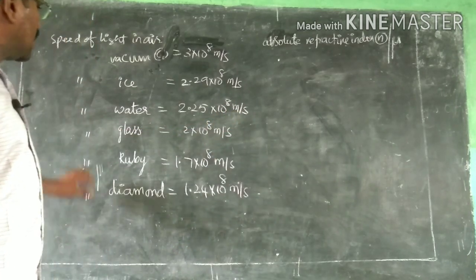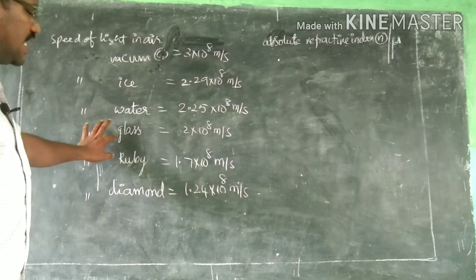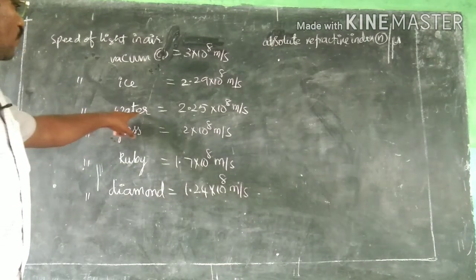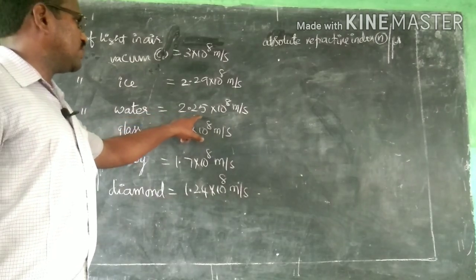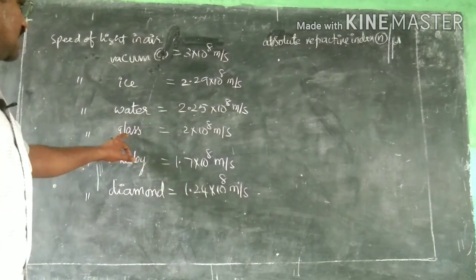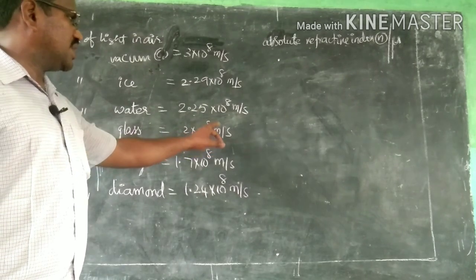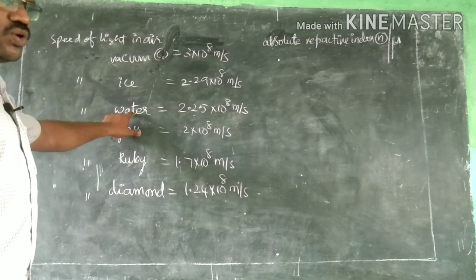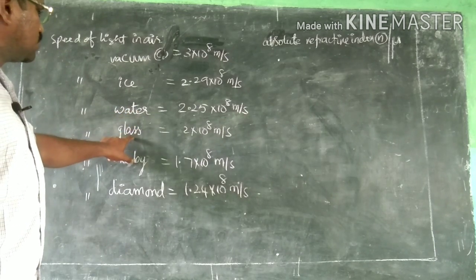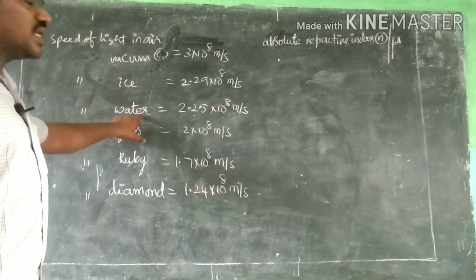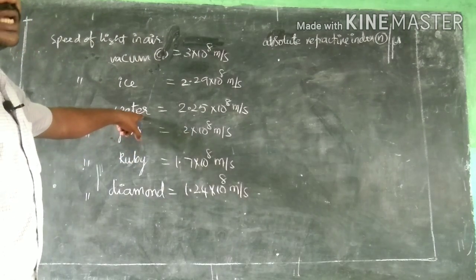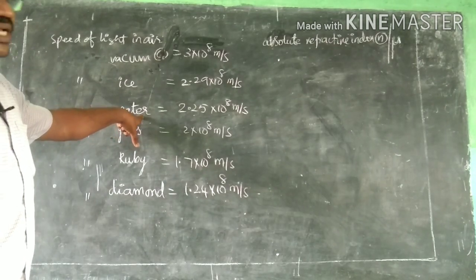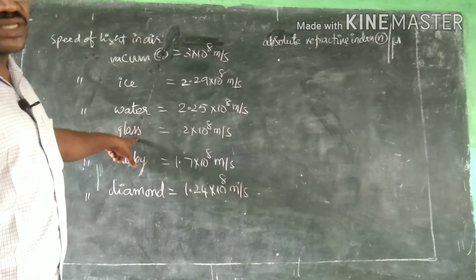In water, the speed of light is 2.25×10⁸ m/s. Comparing water and glass: the speed of light in water is 2.25×10⁸ m/s and in glass it is 2×10⁸ m/s. That means the speed of light in water is more compared to the speed of light in glass. So water is said to be the optically rarer medium when compared to glass.